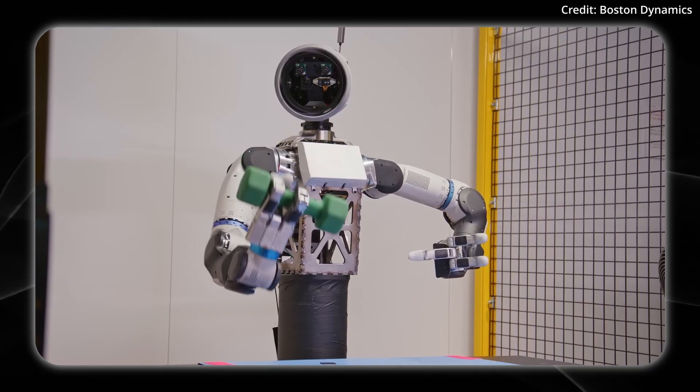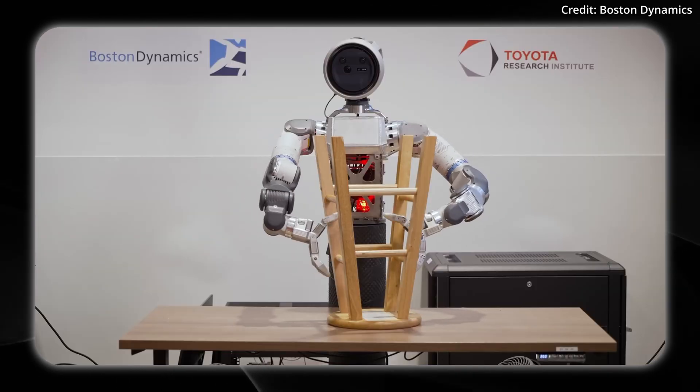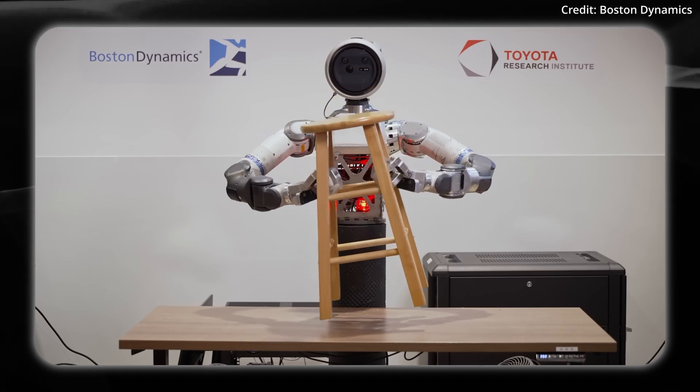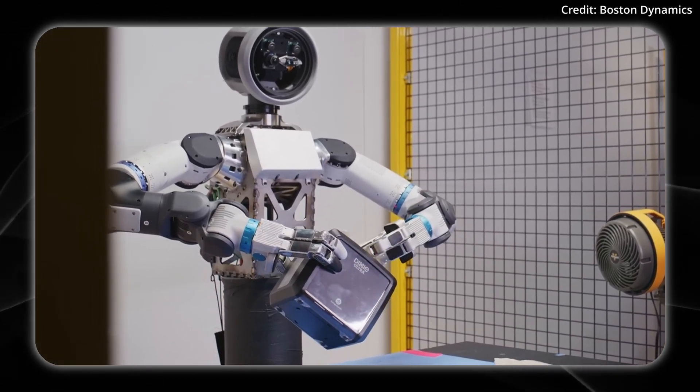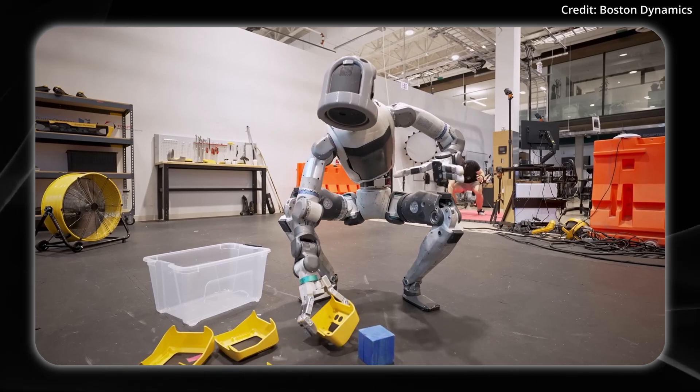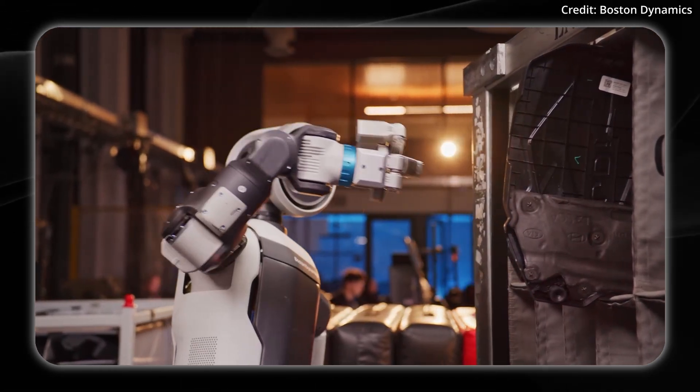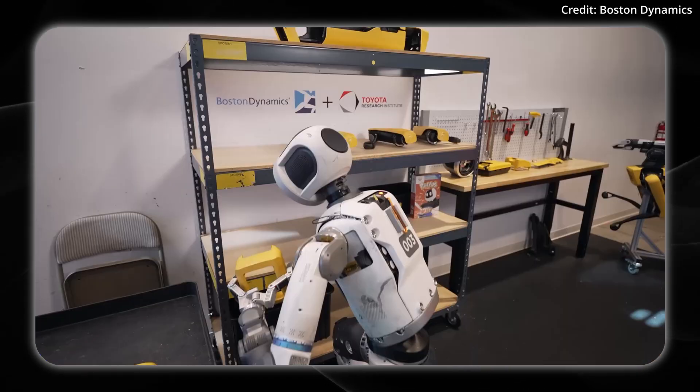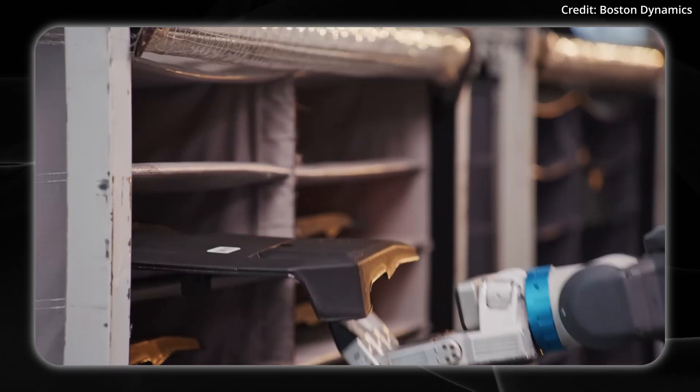But when it comes to the 3-finger design, Boston Dynamics explained why they avoided mimicking human hands. They said that while human hands offer exceptional dexterity and fine motor control, it was just too steep of an engineering challenge for now with the heavy payloads that the robot has to handle. So instead, their current 3-finger design prioritizes durability, with three fingers and an opposable thumb providing manipulation flexibility while minimizing potential failure points. But Boston Dynamics says their future designs could still evolve.